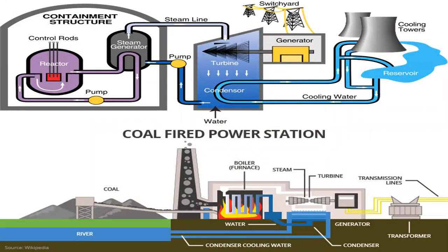Other energy conversion systems are decidedly more complex, particularly those that take raw energy from fossil fuels and nuclear fuels to generate electrical power. Systems of this kind require multiple steps or processes in which energy undergoes a whole series of transformations through various intermediate forms.